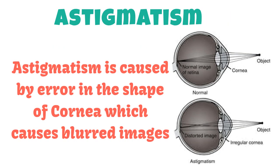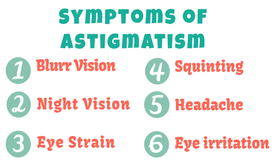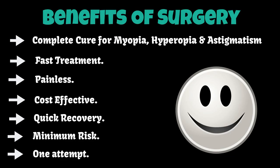Astigmatism is caused by an error in the shape of the cornea, which causes blurred images. The symptoms of astigmatism include blurry vision, poor night vision, eye strain, squinting, headaches, and eye irritation.